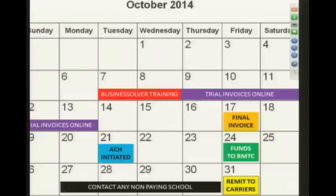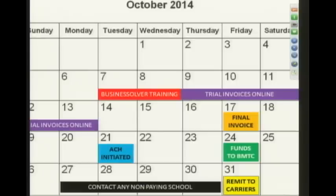Then we start it all again the next month — trial bill period, actual invoice period, ACH sweep, remitting to the carriers. The timeline won't always fall on the same days because Thanksgiving and Christmas affect the end-of-month schedule for November and December. The full calendar will be sent out to everyone so you can plan accordingly for your accounting.